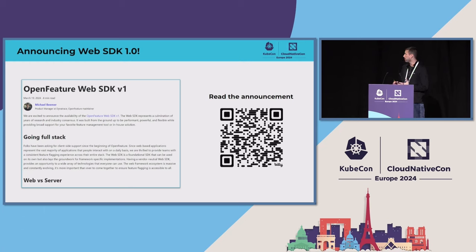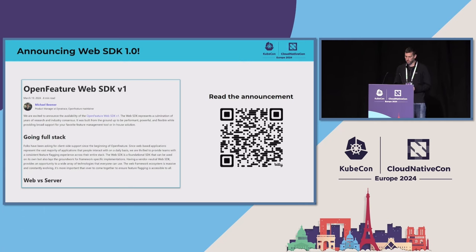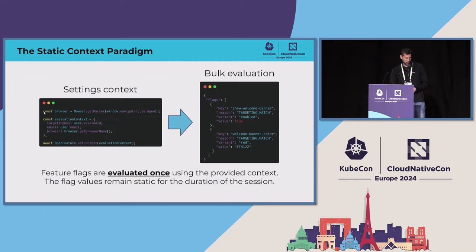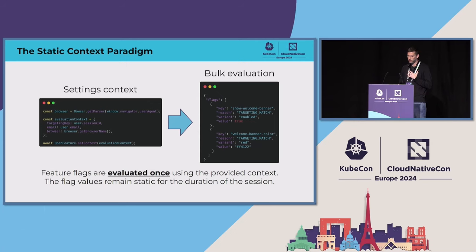Although client-side feature flags look very similar to server-side feature flags, there are some subtle differences. It takes advantage of what we call the static context paradigm, and that's what I'm going to talk about in a moment. Basically, in feature flagging, you're commonly leveraging relevant contextual data.